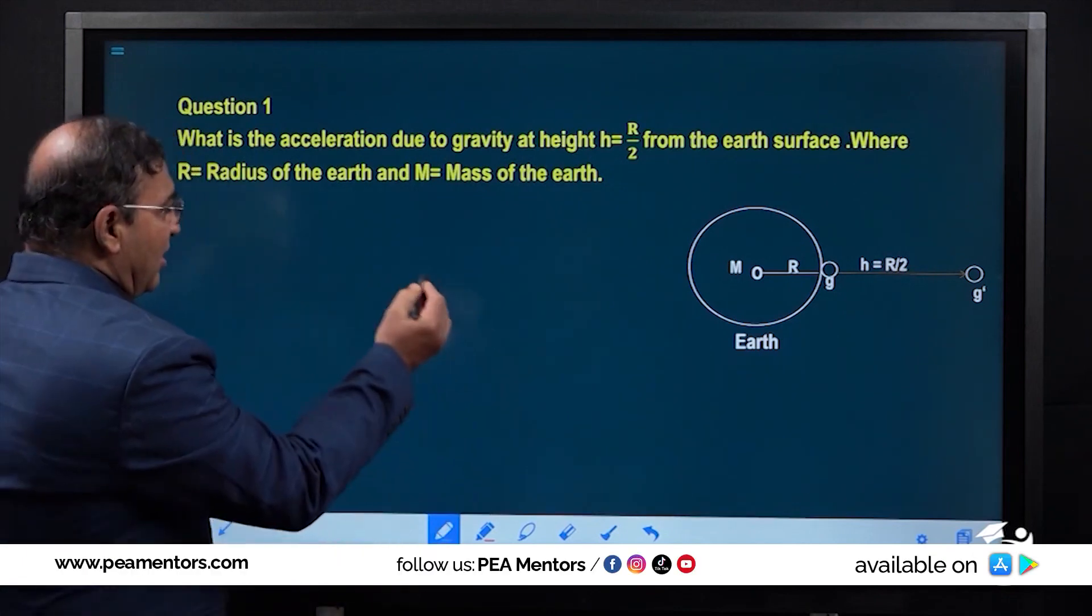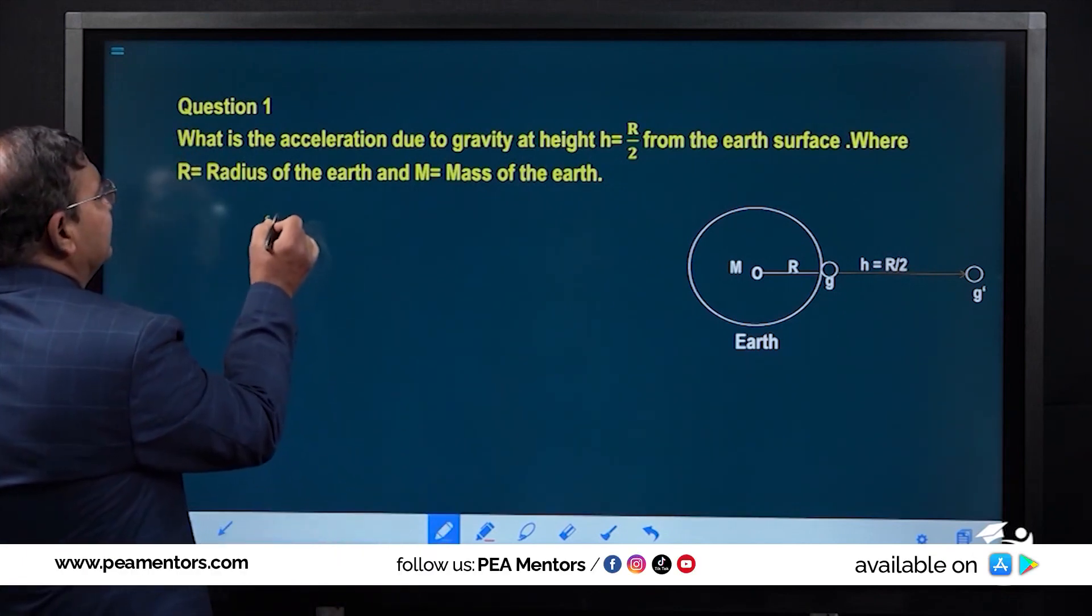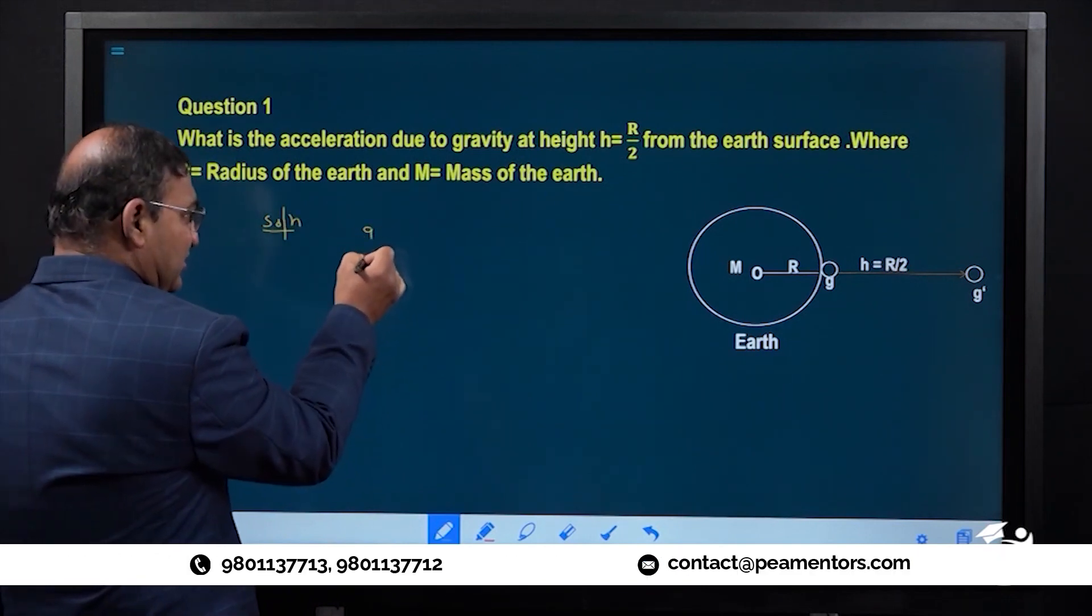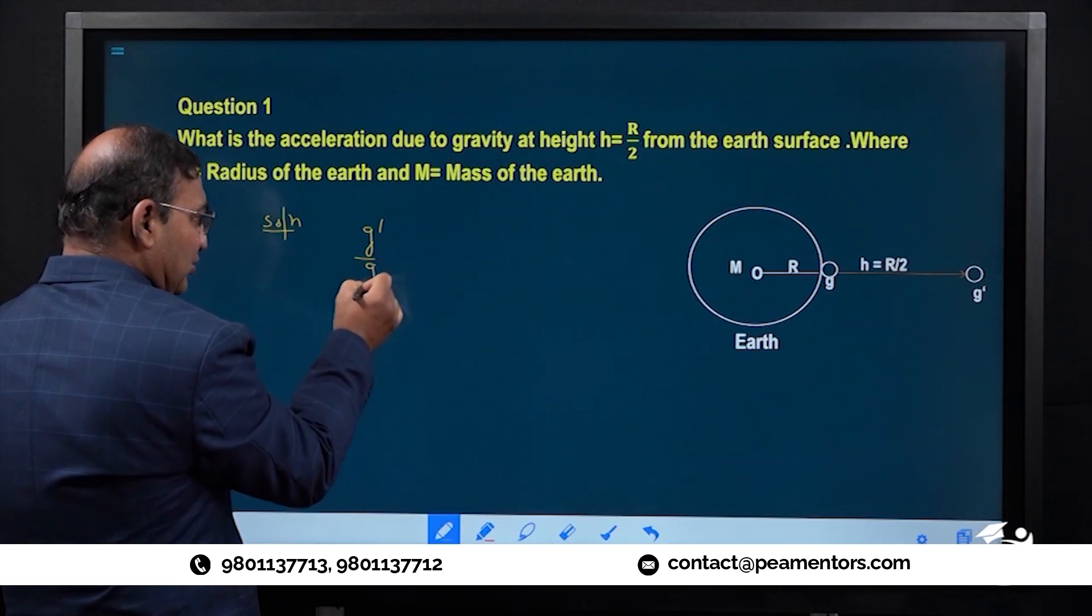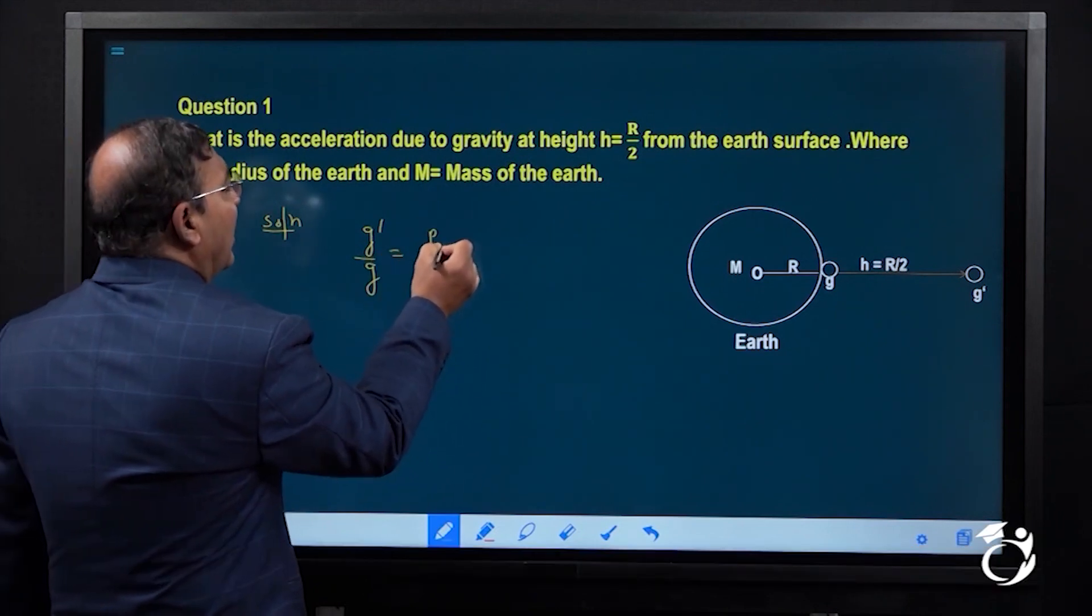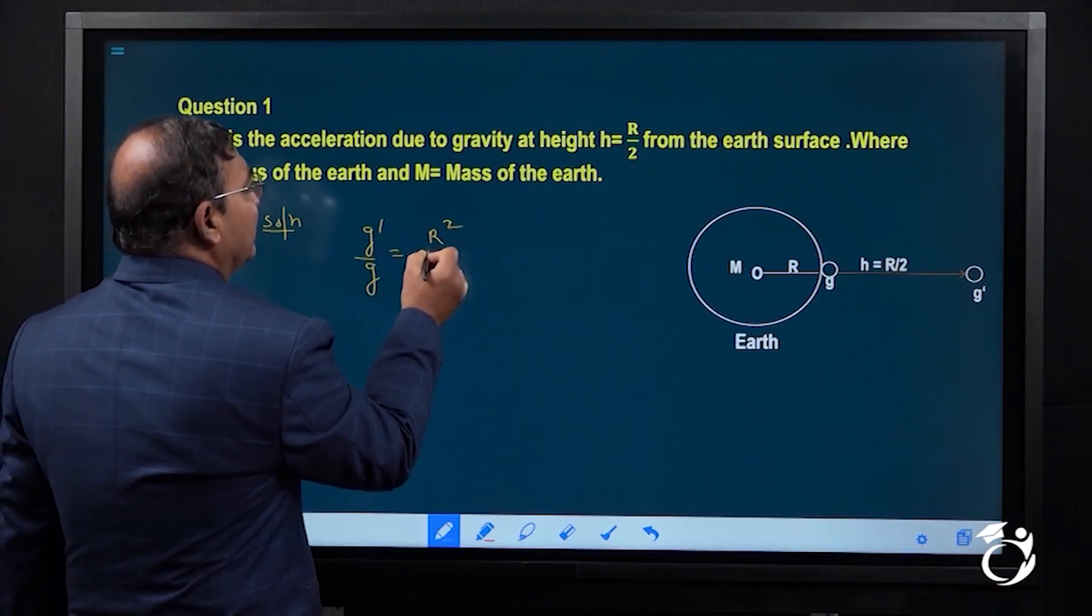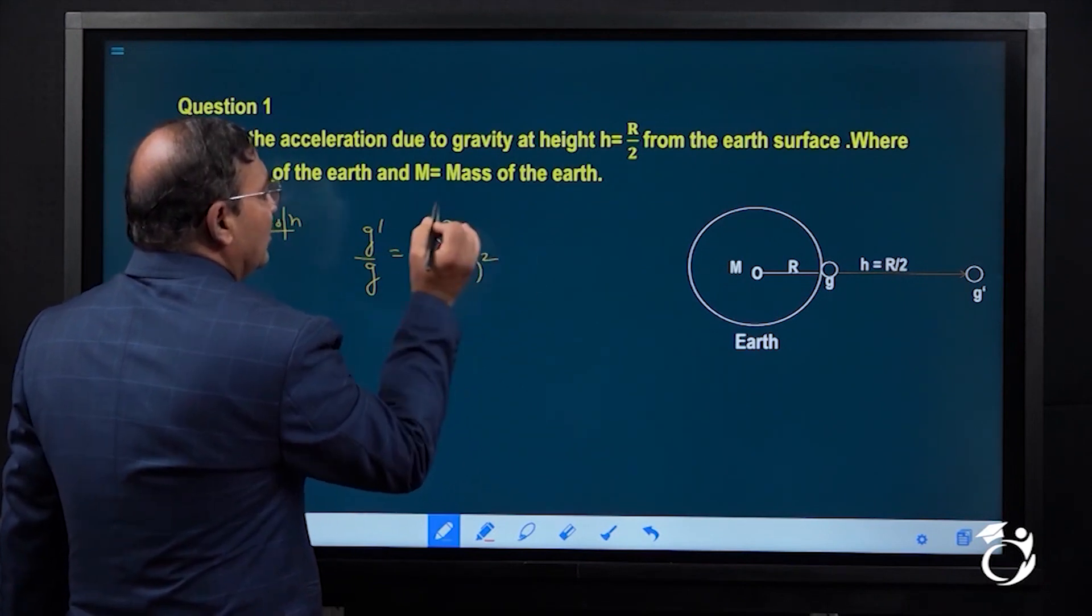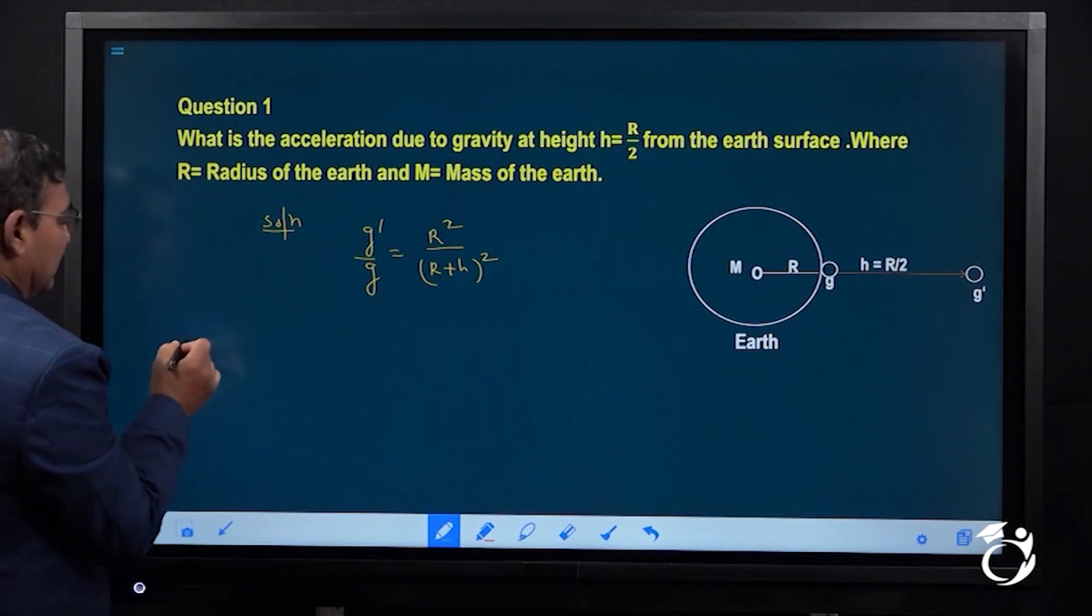Our solution: we have discussed g dash by g is equal to r square divided by r plus h square. We cannot use this formula. We discussed g dash is equal to g times 1 minus 2h by r. This is only applicable if h is very very less than r.